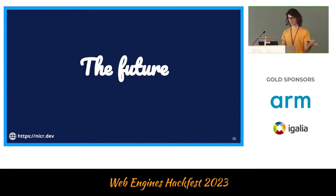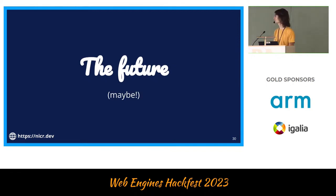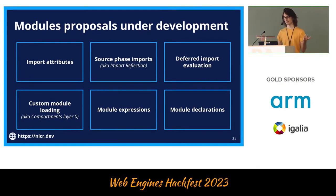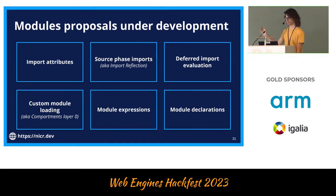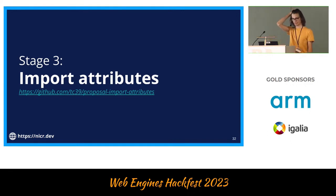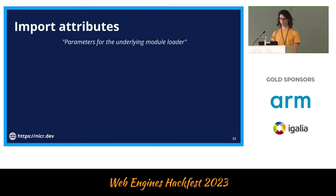We've been talking about six main proposals. The division in proposals is not always clear in this module space because the space is so big — we often find ways to refine the proposal divisions. Some proposals get closer or get split into different functionalities. The first one I want to discuss is Import Attributes. It's at stage three. Import Attributes gives us a way to pass some parameters to the underlying module loader.